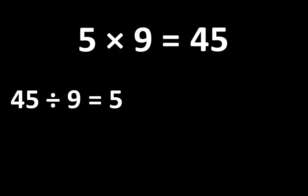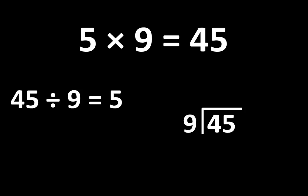45 divided by 9 equals 5 can be written like this: 45 divided by 9 equals 5. We can also write it as a fraction: 45 divided by 9 equals 5.